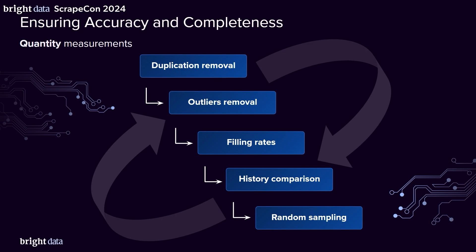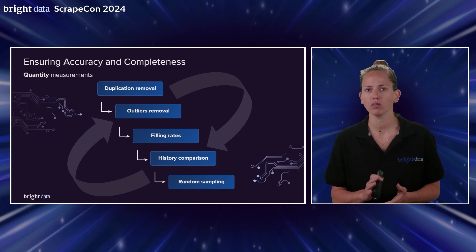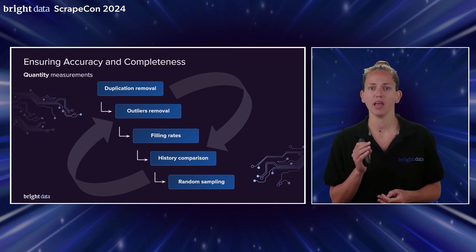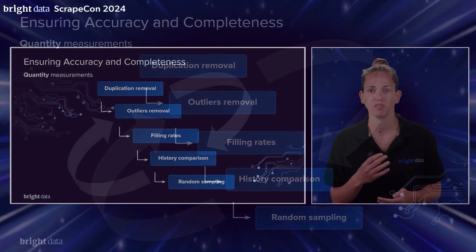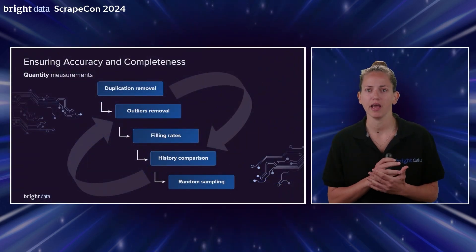Now that we know what data we need, let's talk about the quality of it. Data from the web is super dynamic — it's constantly changing and very sensitive to changes in the world. This is why it's important to keep a process for validating the data. We're talking about a very large scale of data, so we can't manually check each data point. We can use several statistical and quantitative measurements to maintain high data quality. We need to check for duplications and outliers, and every time we collect and update data, we can compare to historical data for sanity checks. We should also always randomly sample and test the data. My team is constantly developing these methods with new automations and improvements, and we always make sure the data we share in the marketplace is clean, accurate, and up to date.